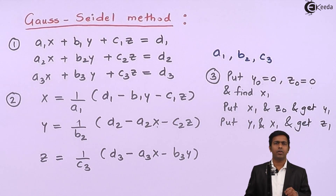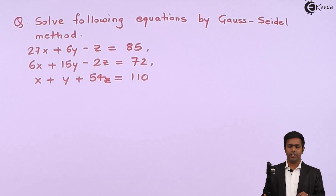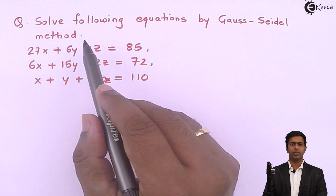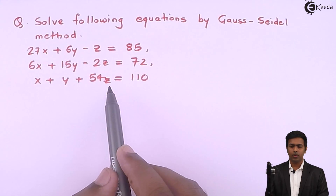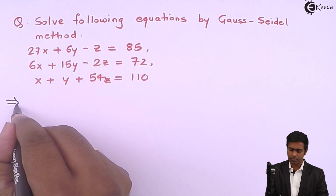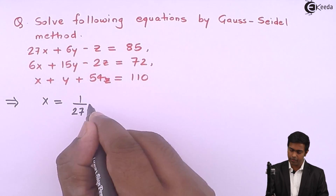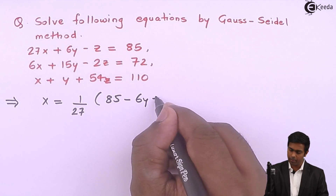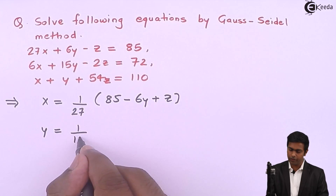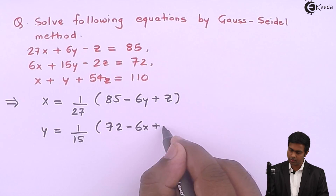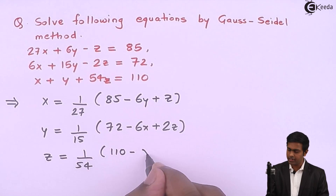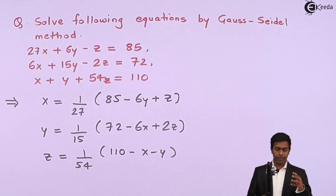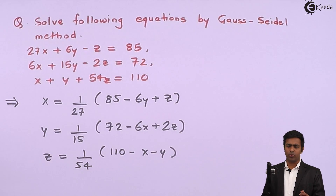To understand this concept, let's take an example: solve the following equations by Gauss-Seidel method. There are three equations, and if you observe, certain coefficients are large compared to the others. We convert these three equations into the required form: x = (1/27)(85 − 6y + z), y = (1/15)(72 − 6x + 2z), and z = (1/54)(110 − x − y). Now we start the iterations to get the values of x, y, and z.